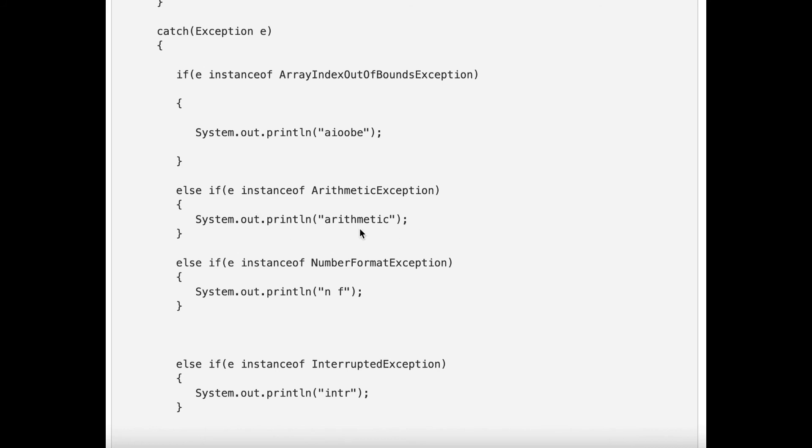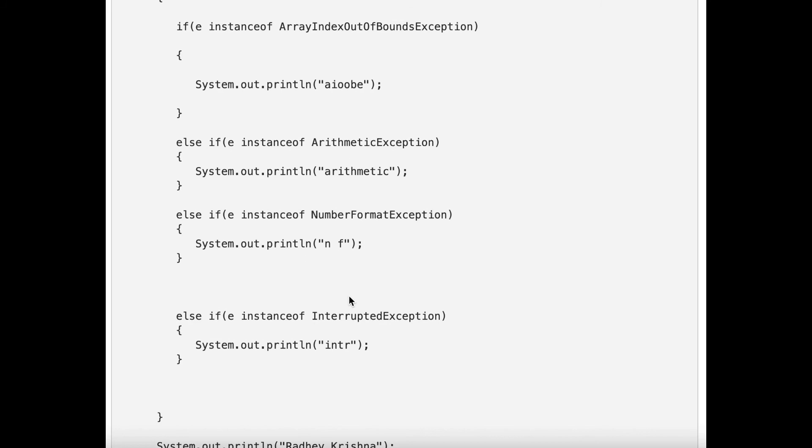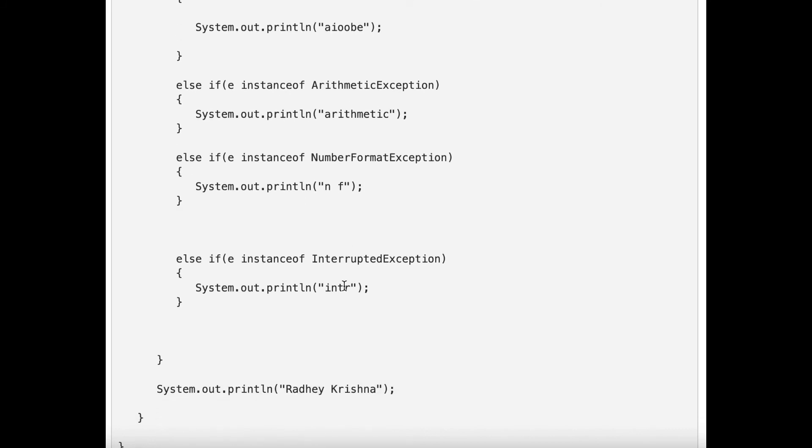Otherwise it will give you null pointer or number format. If there is any issue with the number, then it will give number format. Similarly, we have InterruptedException instance, and if everything is okay or not, we have system.out.println and then we print Radhekrishna.